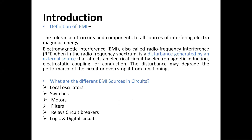Introduction. EMI is the tolerance of the circuits and the components to all the sources of interfering electromagnetic energy. EMI, also called Radio Frequency Interference, is when in the radio frequency spectrum there is a disturbance generated by an external source that affects an electrical circuit by electromagnetic induction, electrostatic coupling, or conduction. The disturbance may degrade the performance of the circuit or even stop it from functioning. What are the different sources of EMI in circuits?